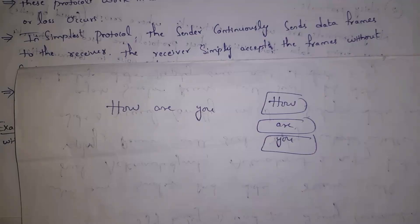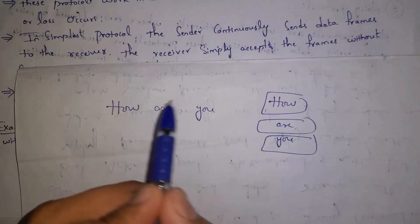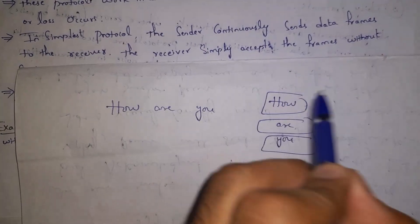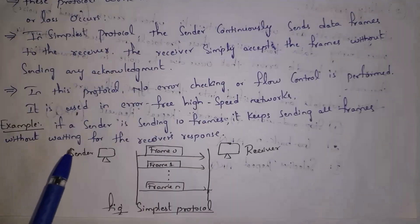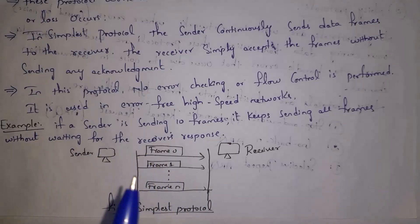A frame is like packing. For example, if I want to send the message 'How are you', 'H' is placed in one frame, 'R' is placed in one frame and 'U' is placed in one frame, and each frame is transferred to the receiver. Instead of sending data directly, we place our data in a frame and then send that frame to the receiver. For example, if sender wants to send 10 frames, sender will continuously send all frames without waiting for the receiver's response. This is all about simplest protocol.